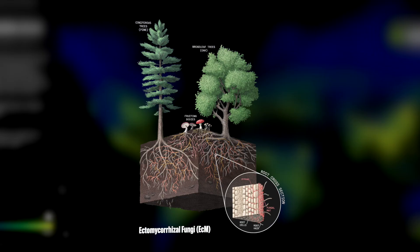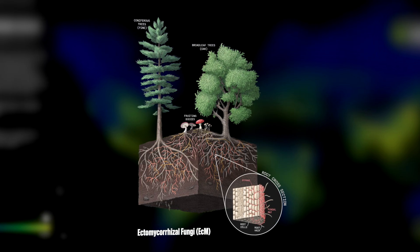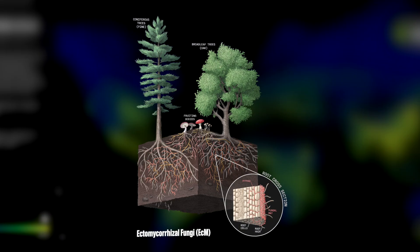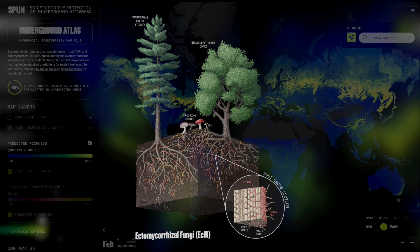In contrast, ECM fungi tend to form associations with only woody plants, including species from birch, beech, oak, and pine families, and many of these fungal species do produce mushrooms.